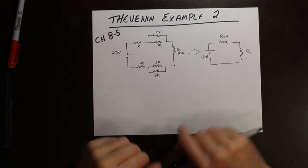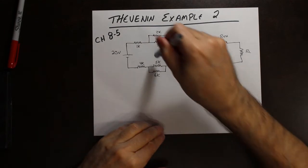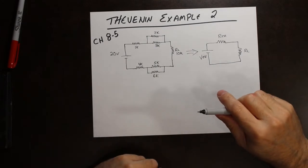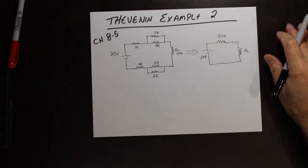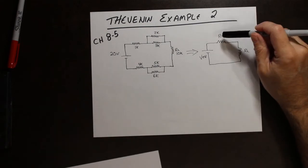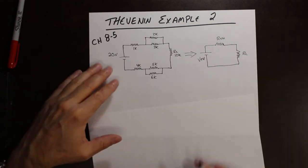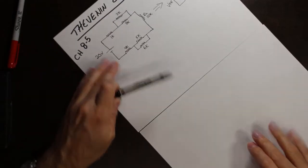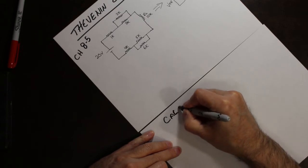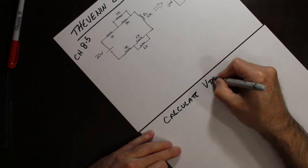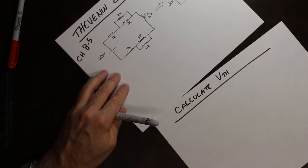Welcome back. We've got this particular circuit and we are going to solve it — this is Thevenin's example number two. We're going to convert the original circuit into the Thevenin equivalent. Hopefully you had success and we're going to test your answer against mine. We're going to be calculating the Thevenin resistance and Thevenin voltage. It doesn't matter which we do first; in this case, just to be different, I'm going to calculate V Thevenin first.